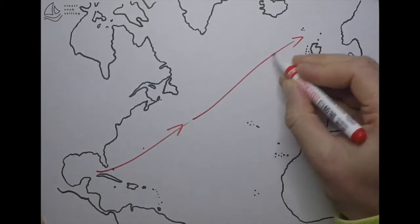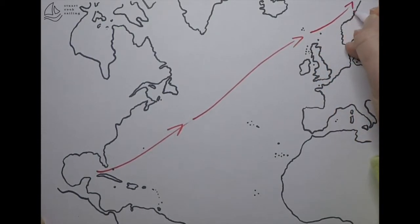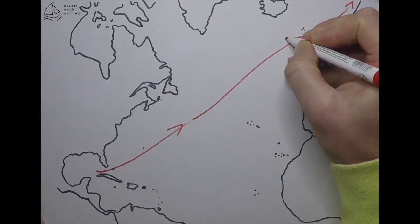After the North Atlantic drift, it turns into the Norwegian current, but it also branches off into the Irminger current.